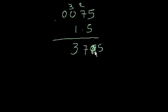So it's 375. Ignore that blob. I'm sorry for being so messy. Then you put a 0. 1 times 5 is 5, 1 times 7 is 7.